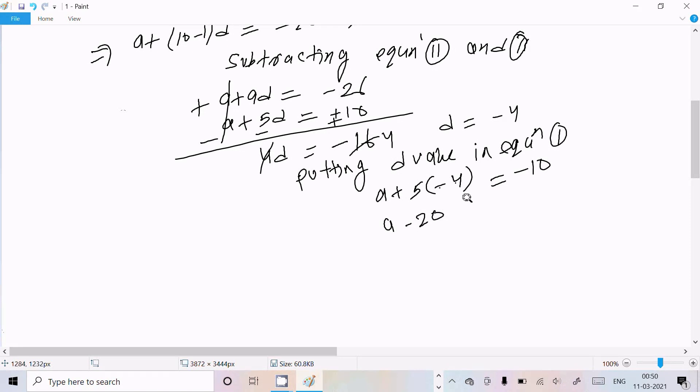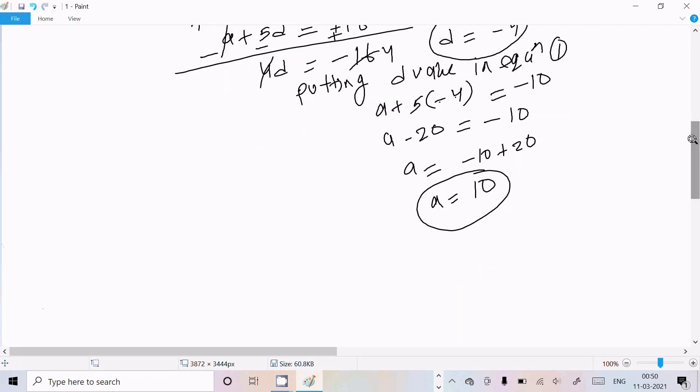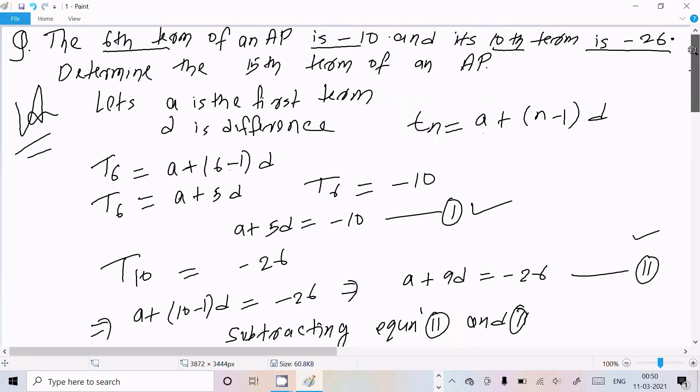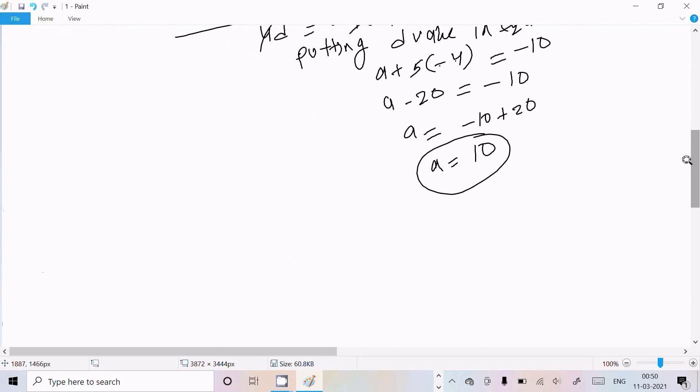So A = -10 + 20, so A = 10. So A and D that I calculated. Now we need to calculate the 15th term.